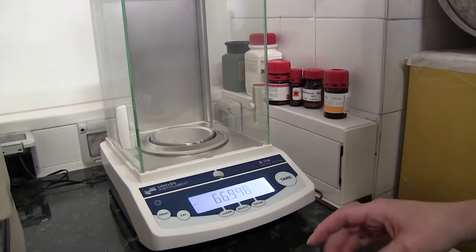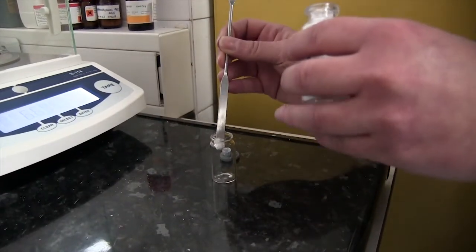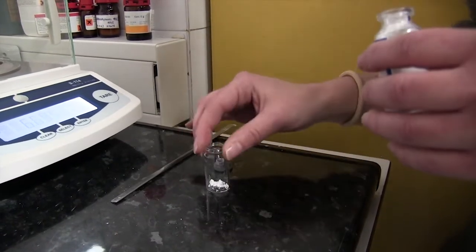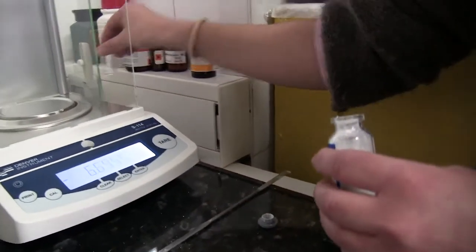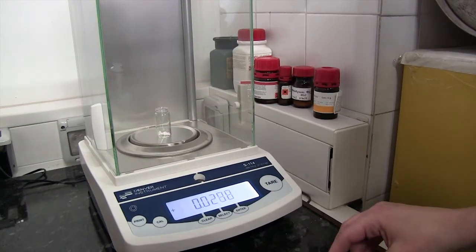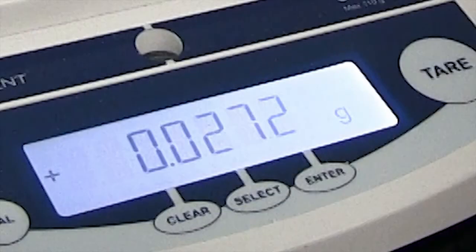Once we tare the vial, we introduce in it, with the help of a spatula, a small amount of the sample taking care of not spilling anything on the table. An amount close to 20 mg is right for a normal sample, although the spectrum could be recorded from a much smaller amount.